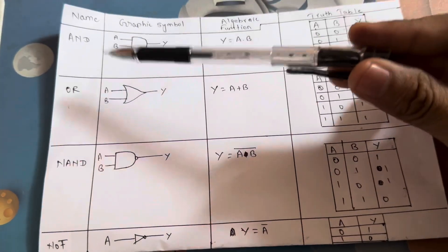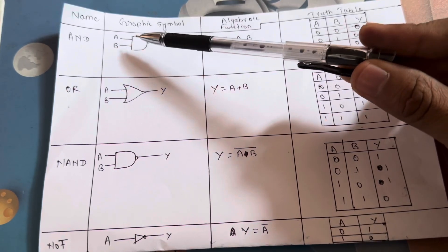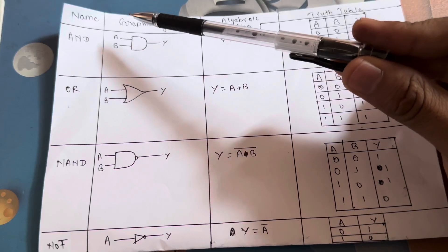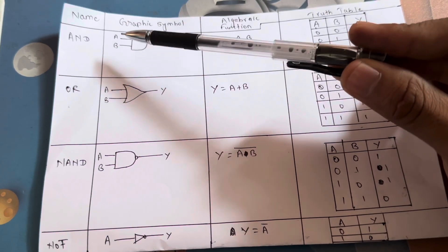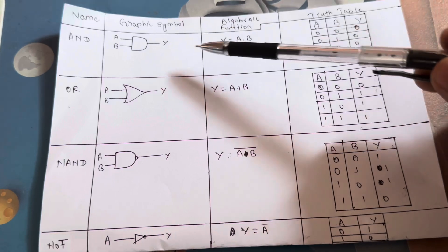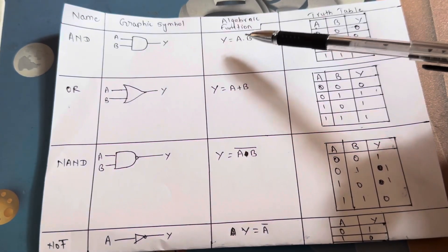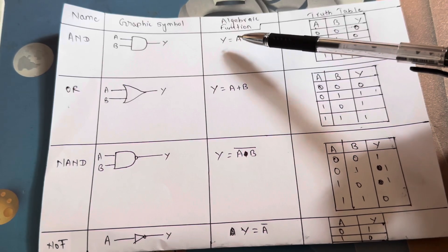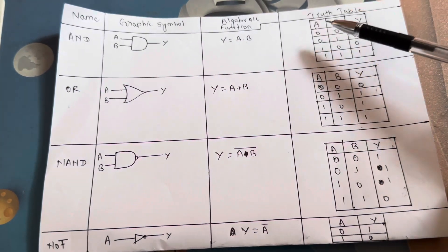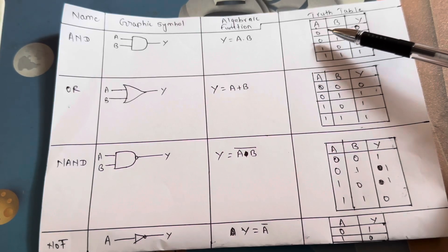First, we will have an AND gate. So what do we have to do in the AND gate? Graphic representation. In the test, we will have A and B as input and Y is the output. Now Y is called the Boolean function, A dot B — it means A multiplied by B. Let's go through the table. In the AND gate, we will have two bits input.